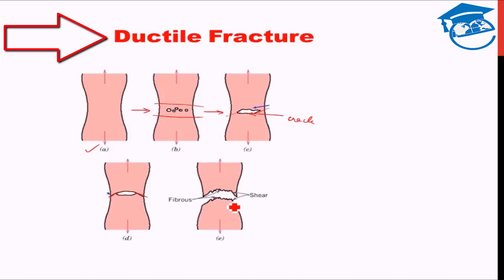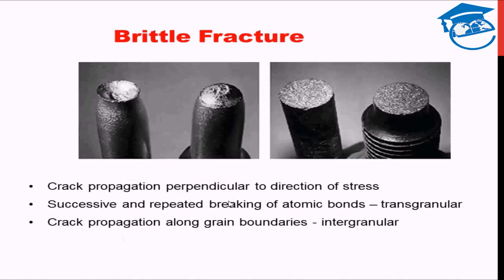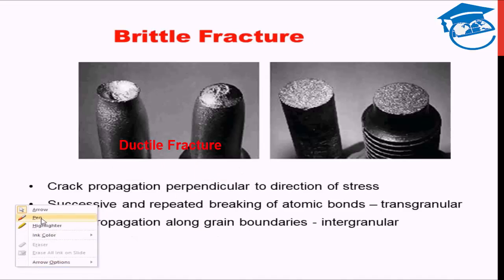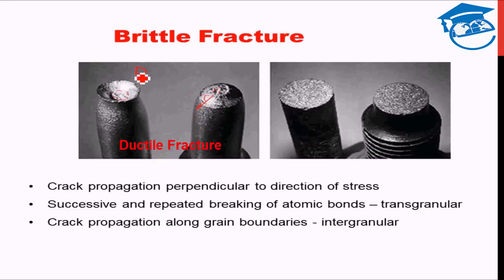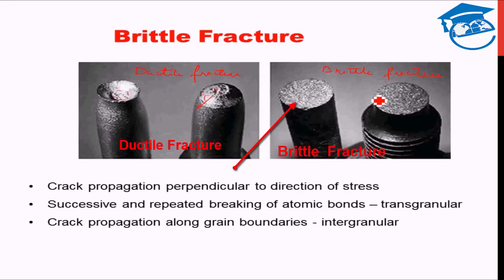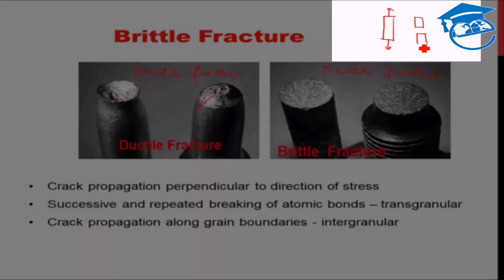In the brittle fracture mechanism — and looking at two figures, one for ductile and one for brittle — in ductile fracture you can see a fibrous region in the center and a shear region at the edges at almost 45 degrees. In brittle fracture, the cracked surface is almost perpendicular to the loading direction. So if loading was applied in one direction, the resulting fracture surface is perpendicular to that load.